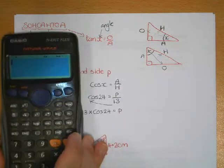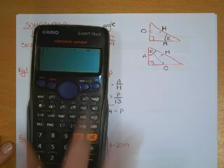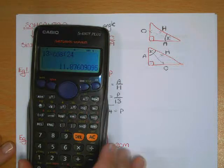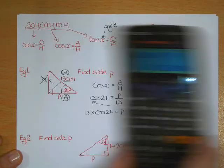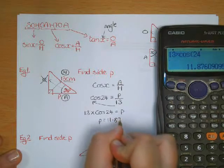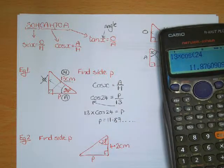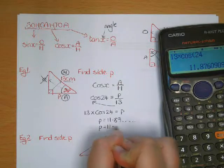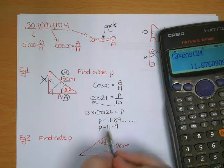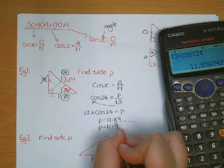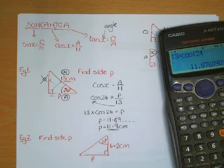Type 13 times cos 24 into the calculator and we get 11.876. So P equals 11.87... Rounding to one decimal place gives P equals 11.9. P was the length of a side, and since the triangle was in centimetres, P equals 11.9 centimetres. And that's the question done.